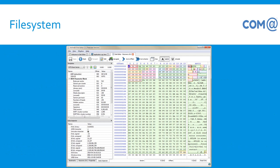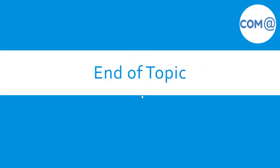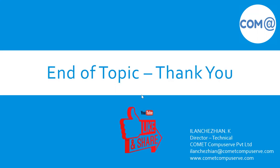This image shows how the file system looks. The cluster address is maintained, and against the cluster address the files or data are present — this is how the file system maintains data on the hard disk. Thanks for watching this video. Do like and share the video and also subscribe to our channel. Thank you all, bye.